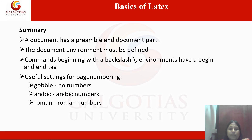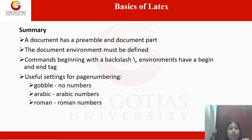To summarize what we have learned: a document has a preamble and a document part. The document environment must be defined. Commands begin with a backslash, and environments have a begin and end tag. Useful settings for page numbering include: 'gobble' if you want no numbers printed on the pages, 'arabic' if the format is to be Arabic numbers, and 'roman' for Roman numerals.